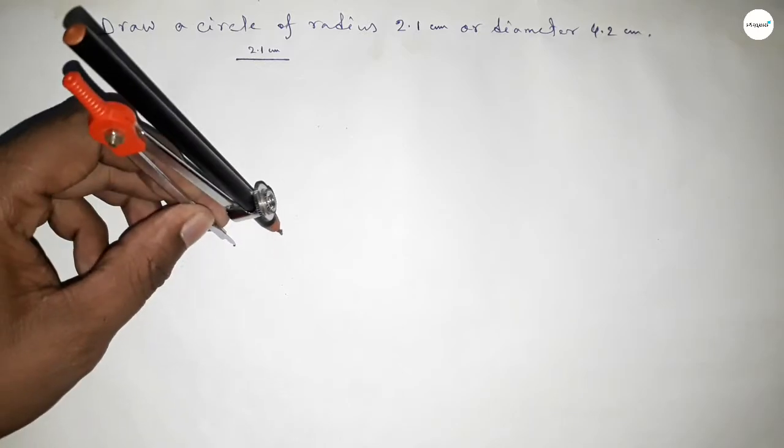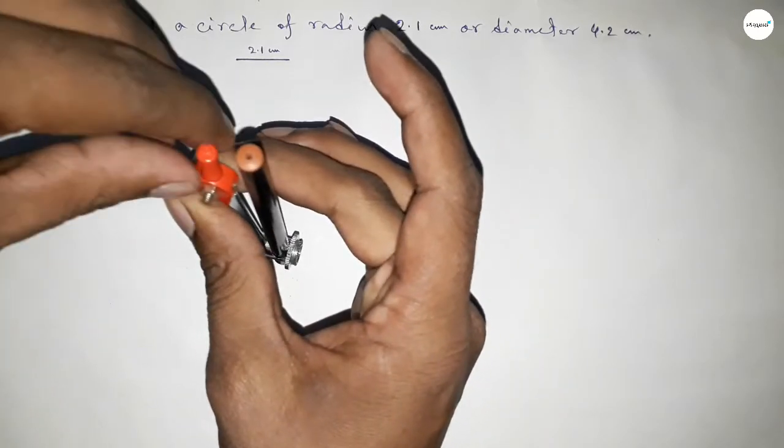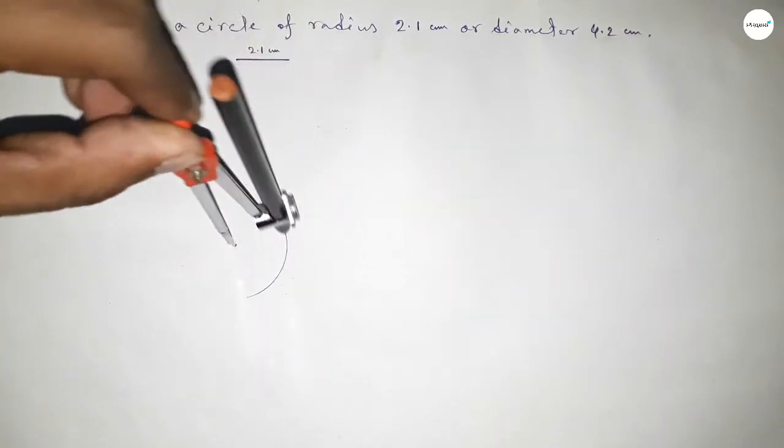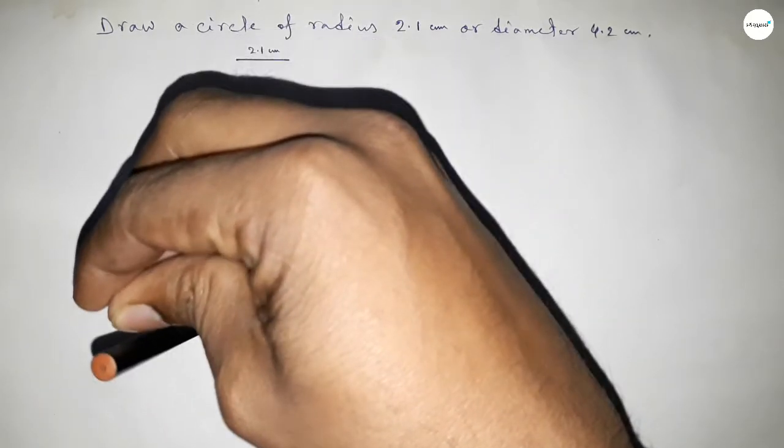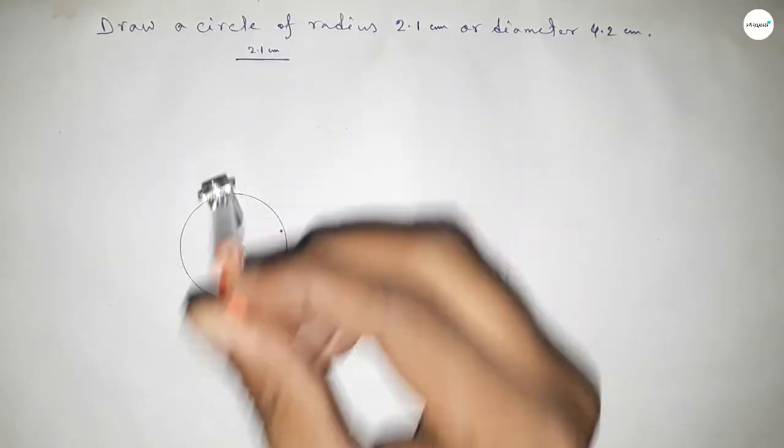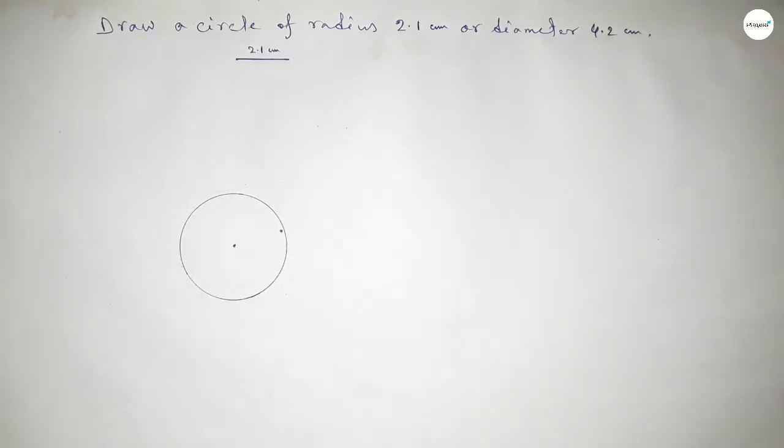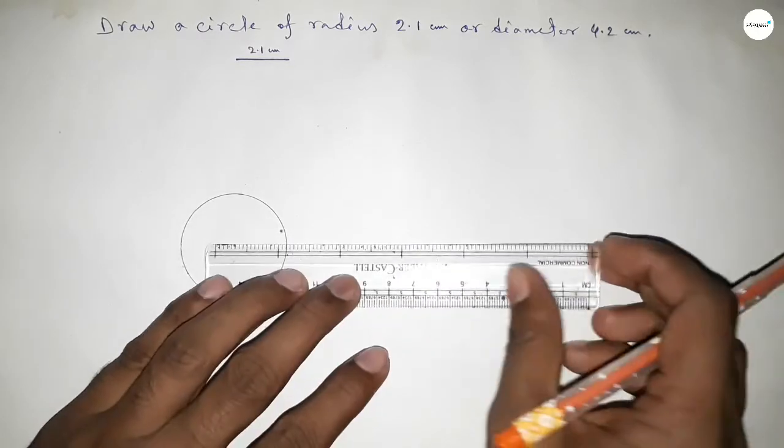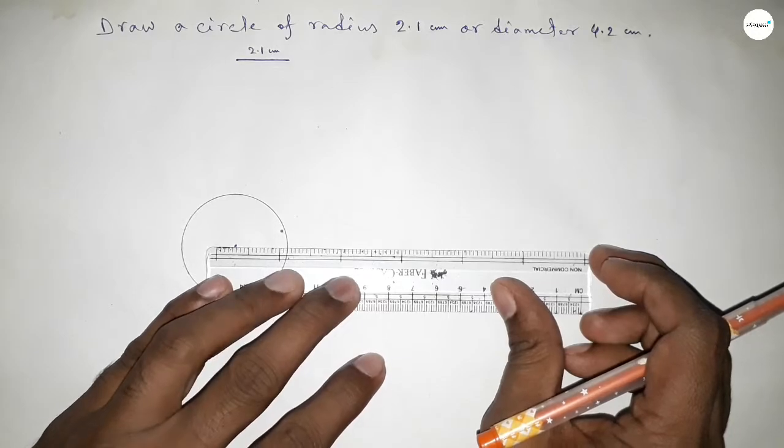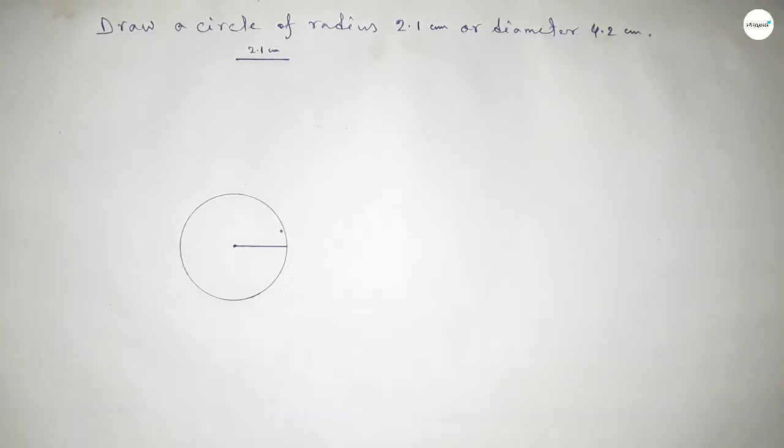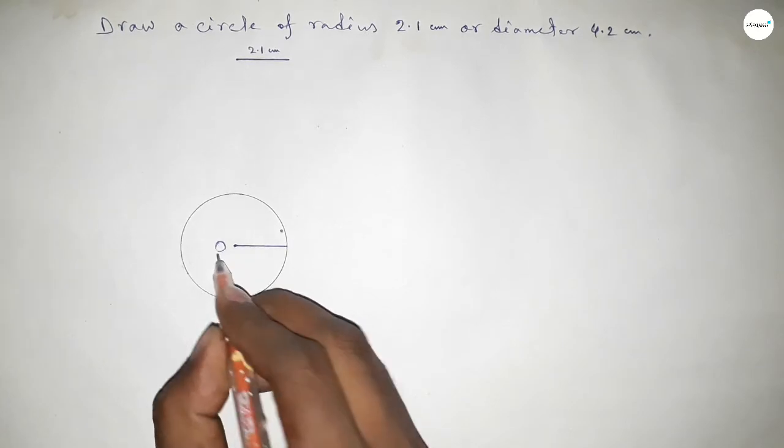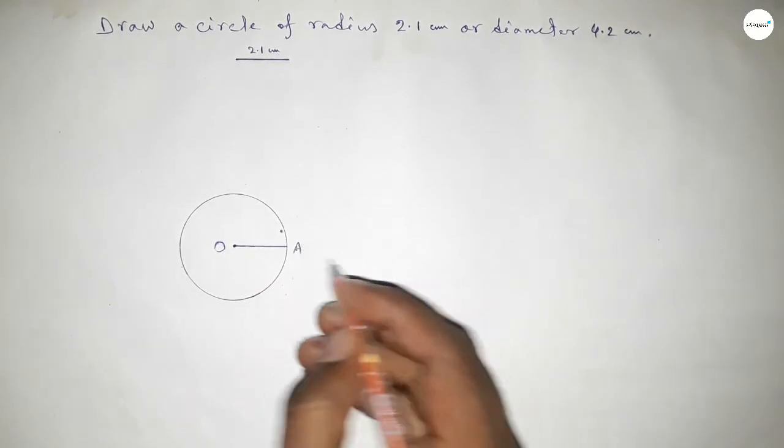So putting the compass on the point, next drawing an arc by this way, which represents a circle with radius 2.1 centimeter and diameter 4.2 centimeter. So joining this and taking here the center O and here a point A.